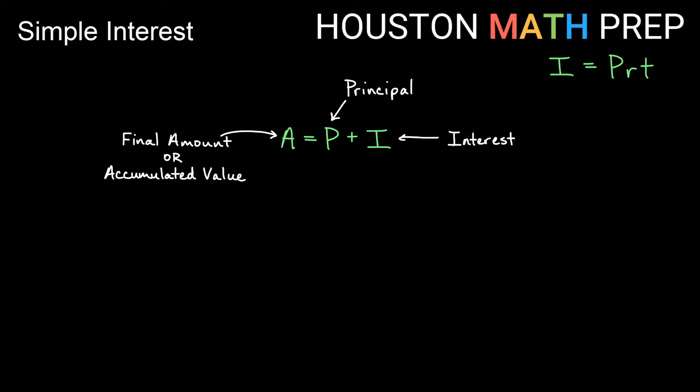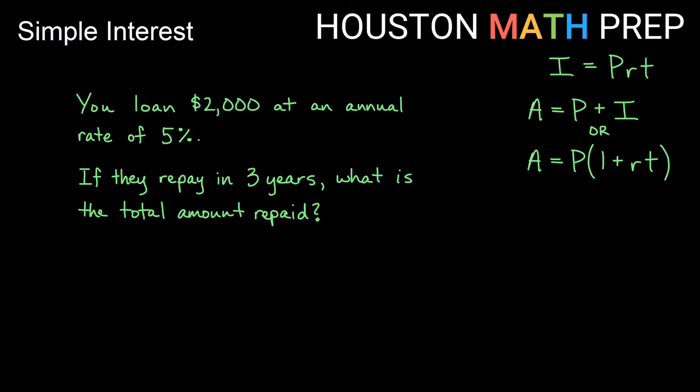As you look at other sources, you may see a different version of this formula. So imagine we take our formula I equals PRT and we take the information PRT for I and we put it in this equation. Well, then that would give you the accumulated value equals P plus PRT instead of P plus I. And then what some sources will do is they'll factor out the common term P and they'll give you this formula A equals P times one plus RT. But this is still the same expression as principal plus interest, it's just given to you in a different form. There are occasions where it may be quicker and more useful to use this.